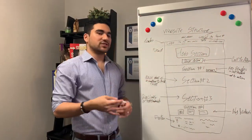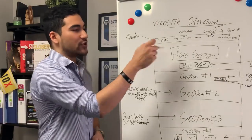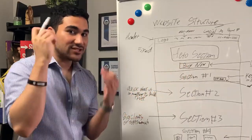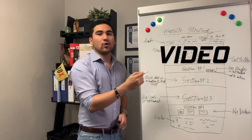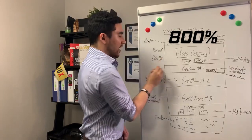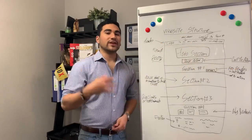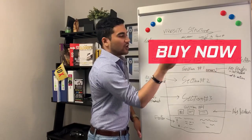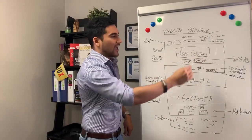Then we have the hero section, which is the part where usually there's a carousel, video background, etc. This is a super powerful tool to promote your products, make people click on the buy now button, and catch their attention on your brand, product, and services. I always recommend using a video because video can have over 800% conversion rate over a regular image.